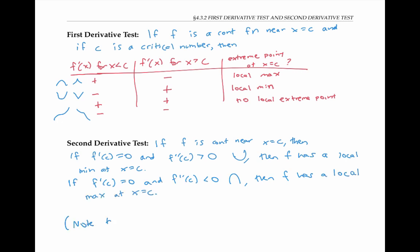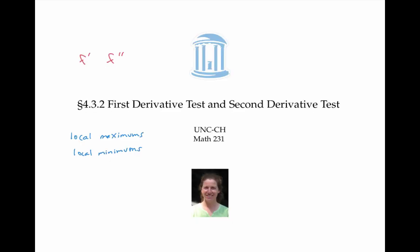Note that if f double prime of C is equal to zero or does not exist, then the second derivative test is inconclusive. We might have a local max or local min at x equals C, or we might not. So we'd have to use a different method, like the first derivative test, to find out. In this video, we introduced the first derivative test and the second derivative test, which allow us to determine if a function has a local minimum or a local maximum at a certain value of x.